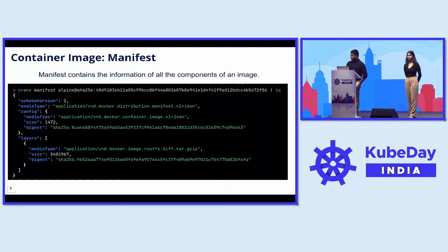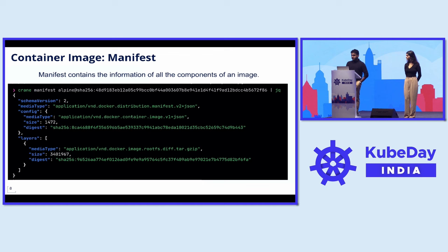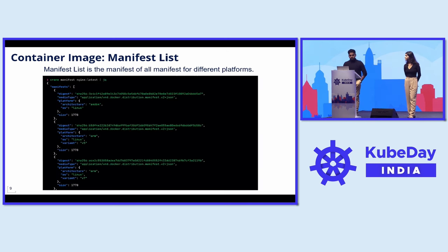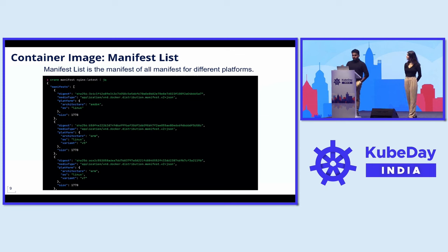Now that we have the config and layers, how do we distribute this to users? We have another data type called an OCI manifest. A manifest is a JSON object that has information about all the layers as well as the configuration. When you fetch the image, the client uses the config and the layers to start the container. For multi-platform images, there is another data type called a manifest list, stored at the root of the container image, which gives you a list of all manifests with OS support information.